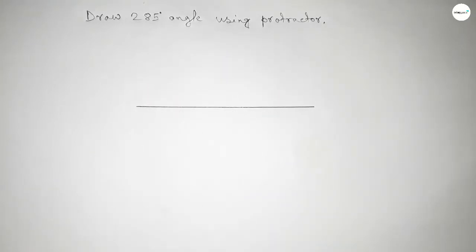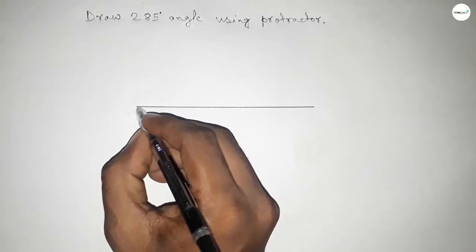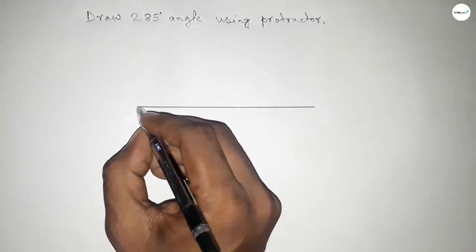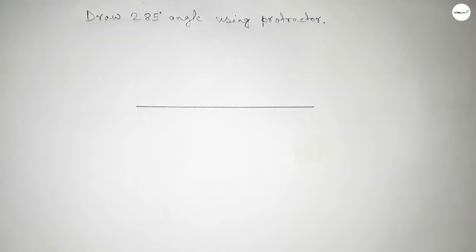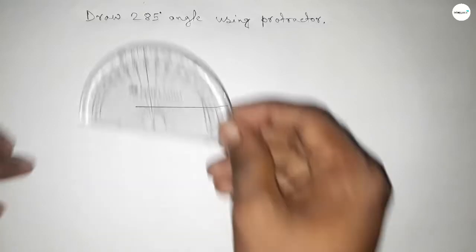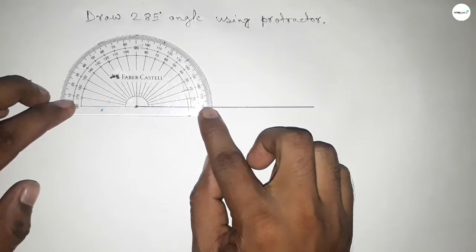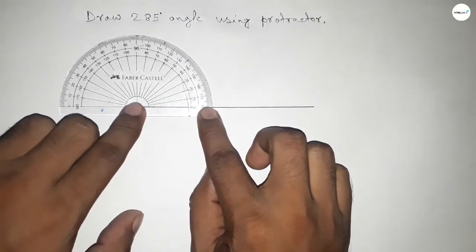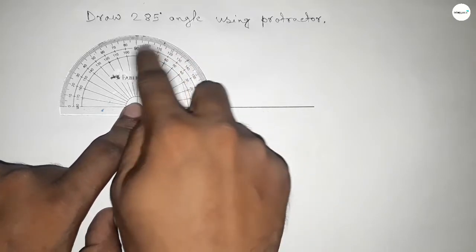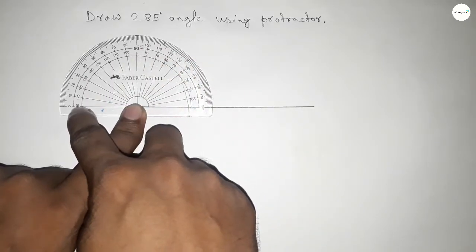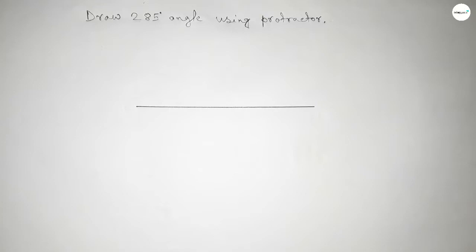First, drawing a line. Now pointing out here to draw a 285-degree angle on this point. Now putting the protractor on the line perfectly, then counting the angle. So this is up to 180 degrees, but we have to draw a 285-degree angle.